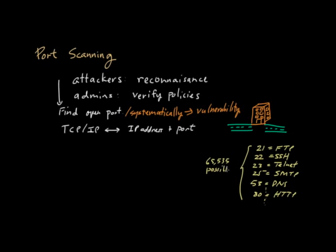65,535 is a number that many computer security and computer science people have committed to memory, because 65,535 equals 2 to the 16th minus 1. That's because 16 is the number of bits used to encode a port number — with 16 bits you can form 2^16 possible numbers, and since 0 is not used, that leaves 65,535 possibilities.